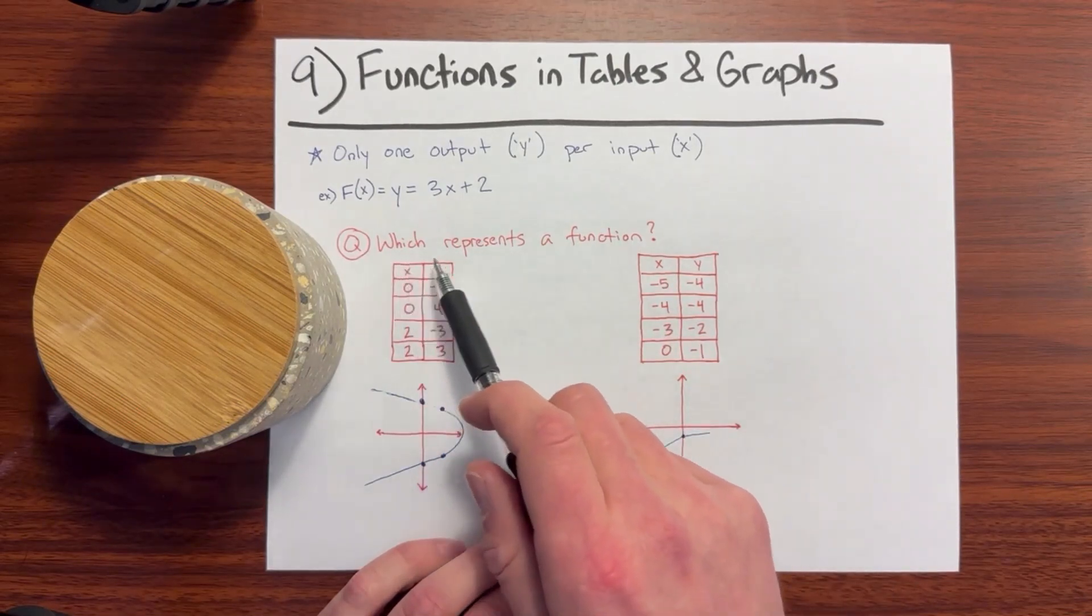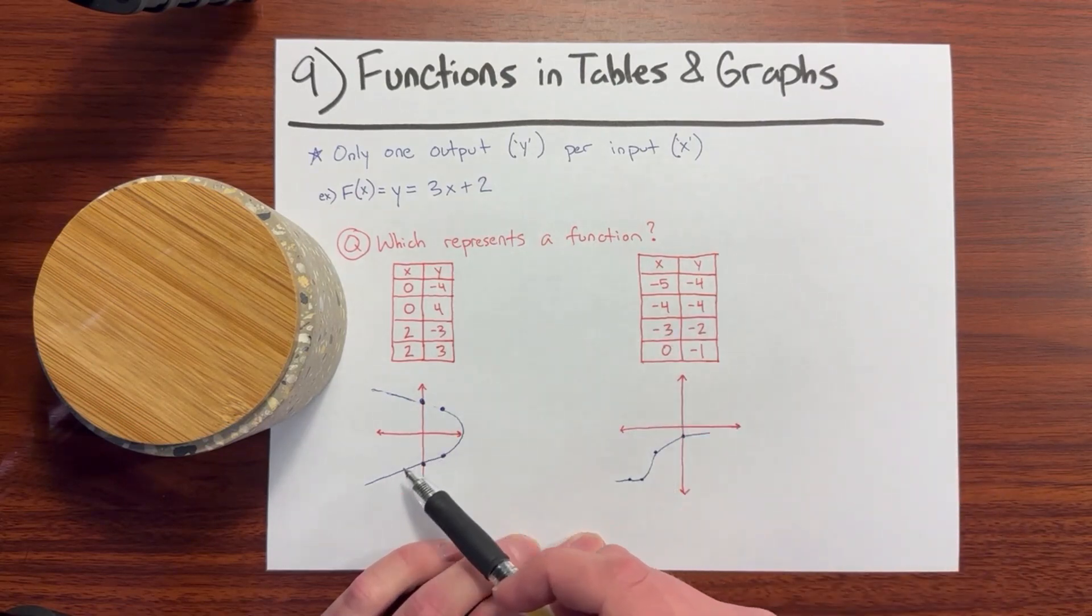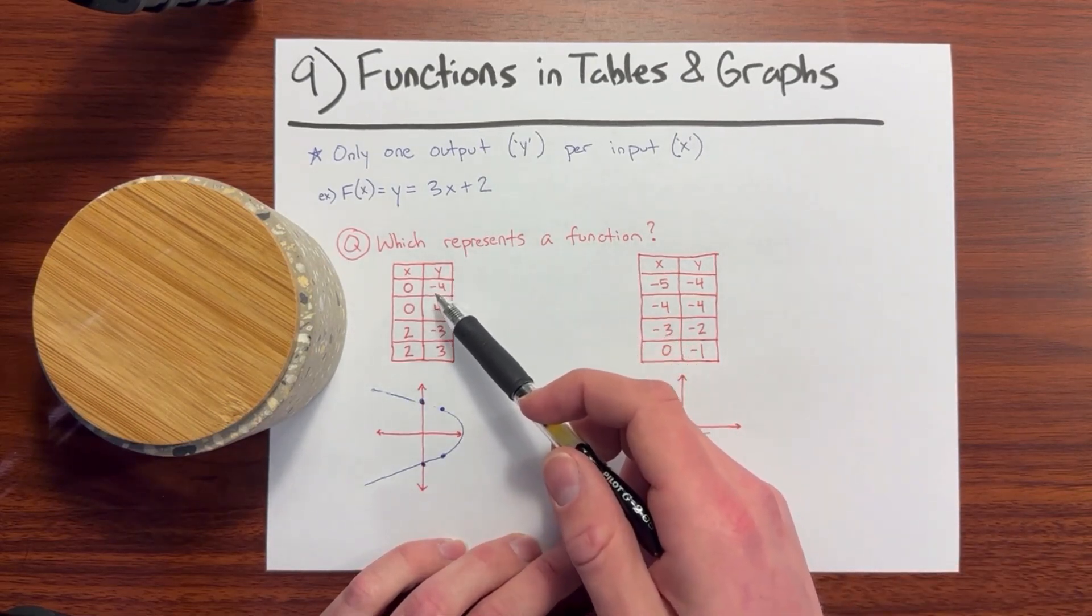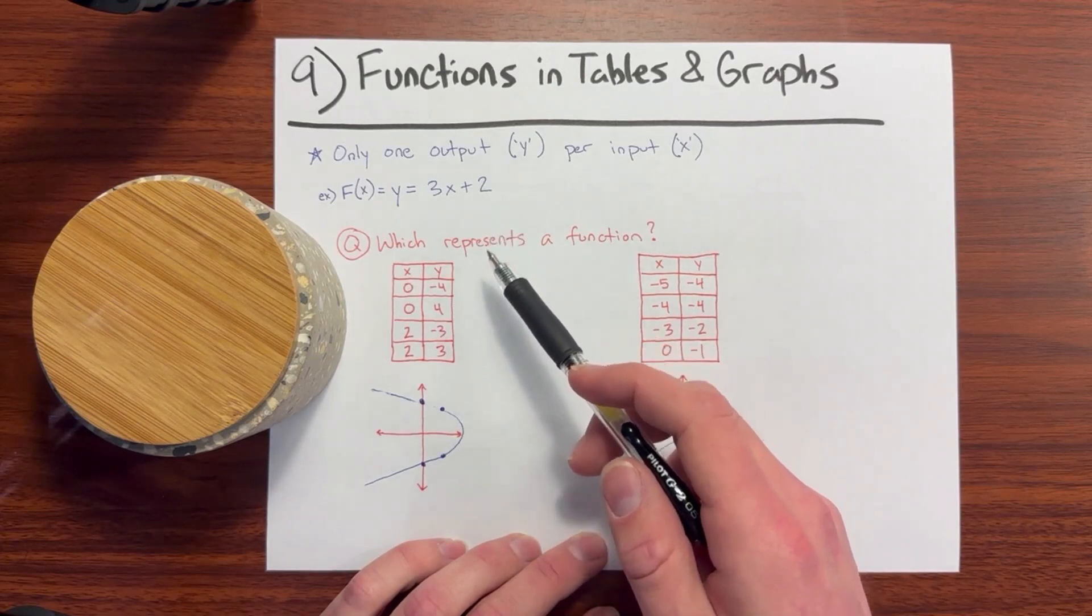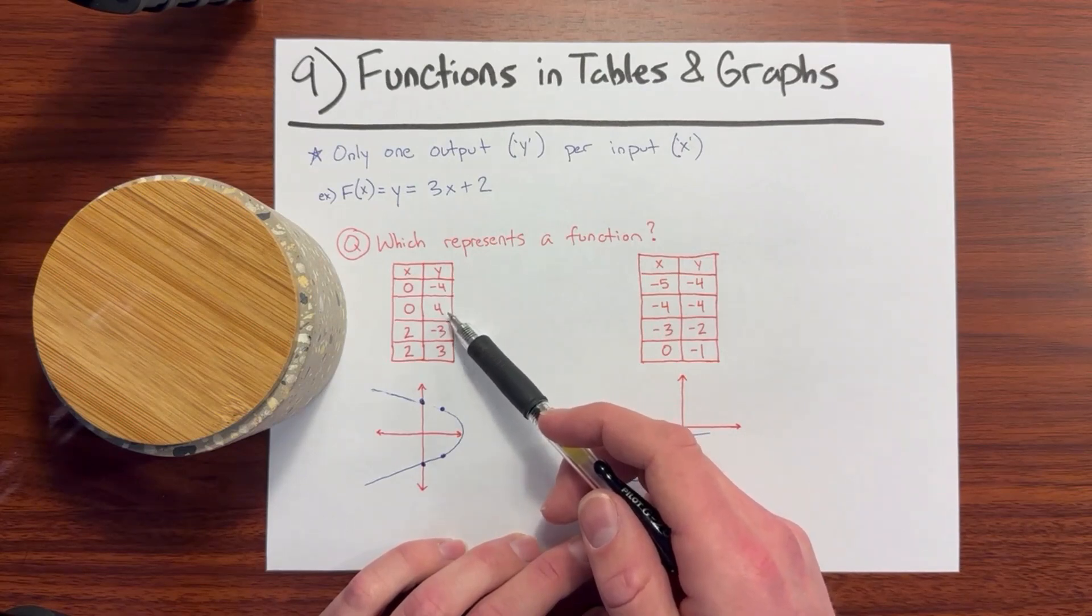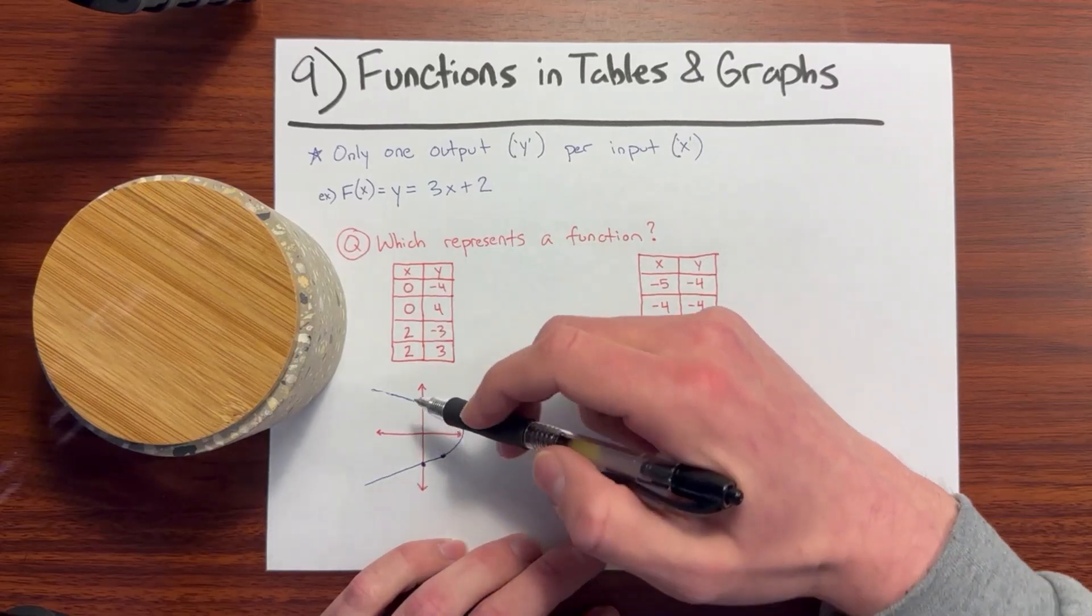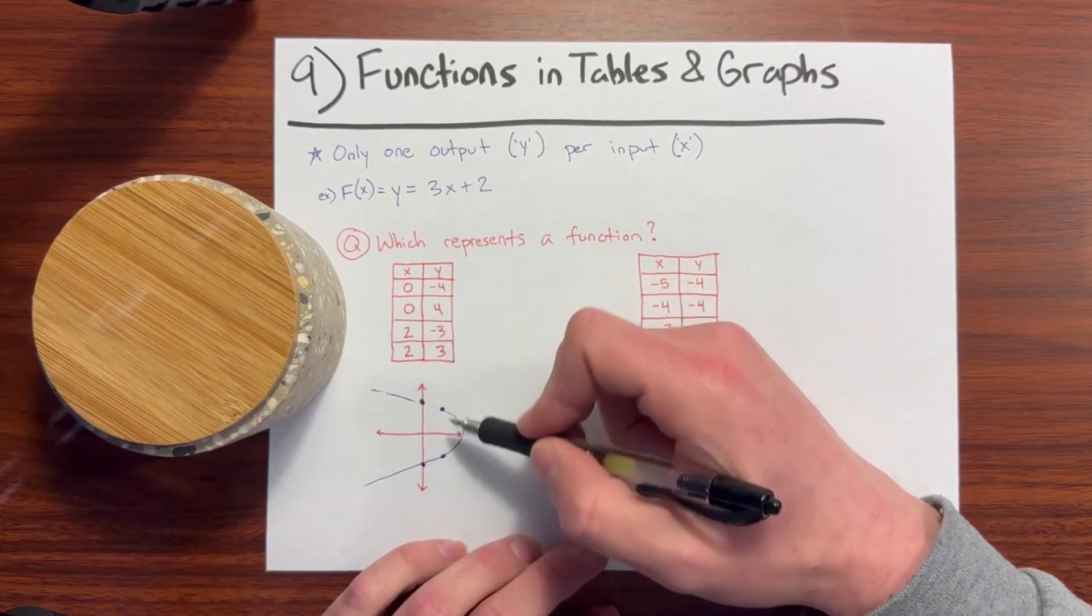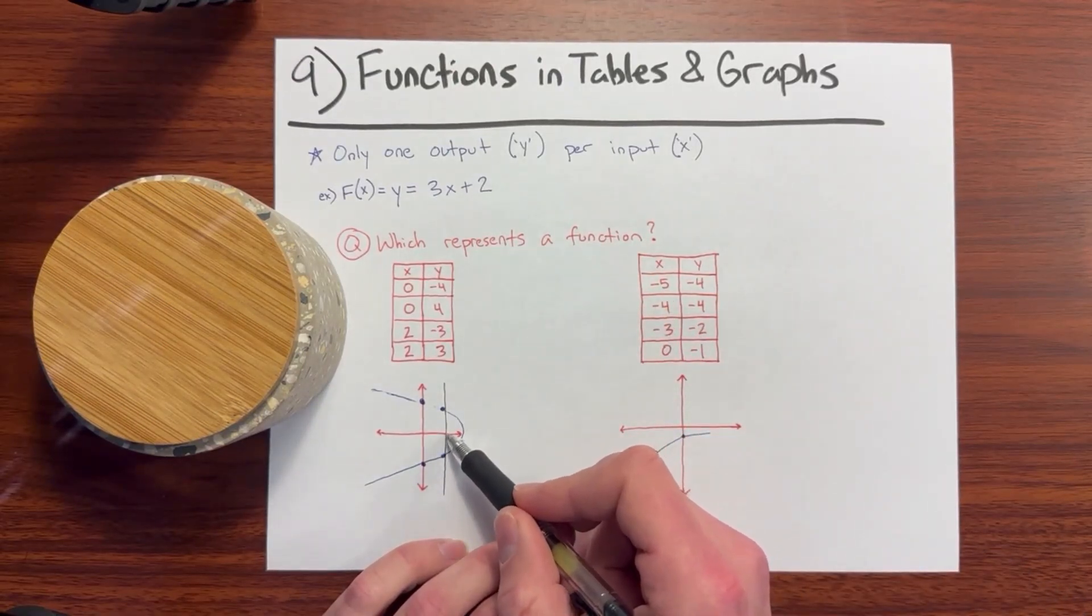So a question could ask, which represents a function? So we are given two tables with different points. And I've gone ahead and plotted those points to see what it looks like. The first table has the points 0, negative 4, 0, 4, 2, negative 3, and 2, 3. As you can see, for a single input of x, there are multiple outputs y. So we can tell already that this is not a valid function. If graphed, we can see that it actually most likely curves around, but specifically these points here, which are given. If we run a vertical line, we're going to be seeing that there are two outputs for every input x.